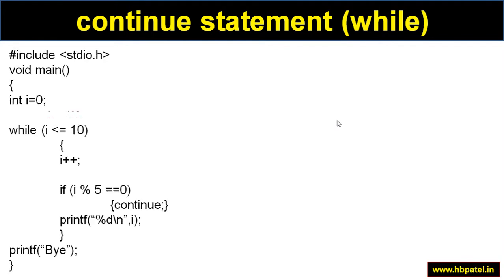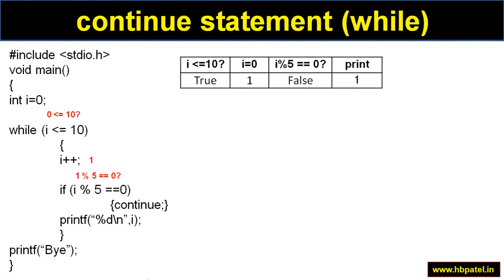Let's take a simple example. We have one variable i equal to 0, and we repeat a loop while some condition is satisfied. We have one condition and a continue statement — if the condition is satisfied, continue is executed; otherwise it goes to the next statement. Initially i equals 0, which is less than 10, so we increment i to 1. Then we check: 1 modulo 5 equals 0? False, because 1 is not divisible by 5, so continue is not executed.